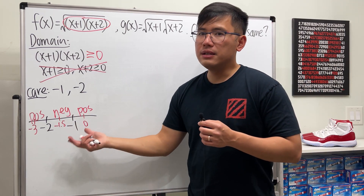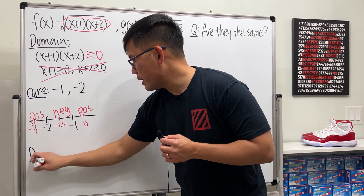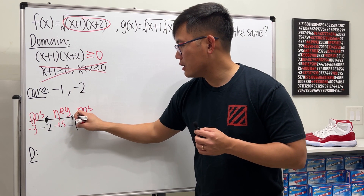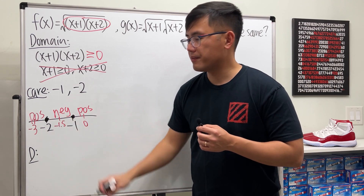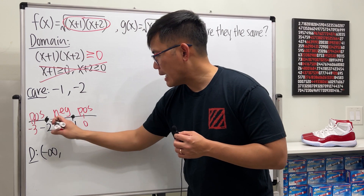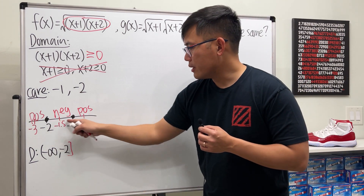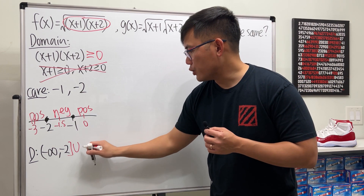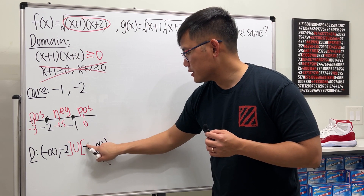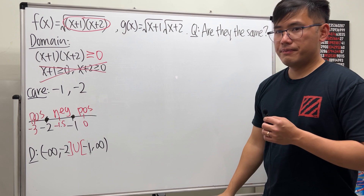Looking at the sign chart, we need the intervals where the expression is positive or zero. We include the cut numbers since we have the equal sign. The domain of f is: from negative infinity up to -2, including -2, union from -1, including -1, to infinity. So the domain of f is (-∞, -2] ∪ [-1, ∞).